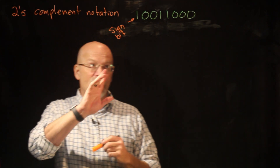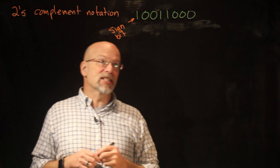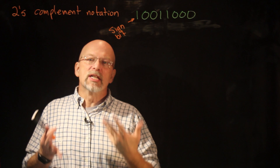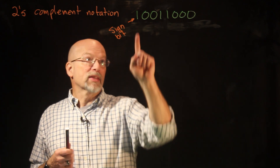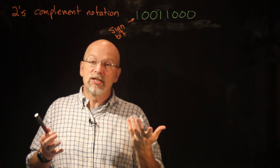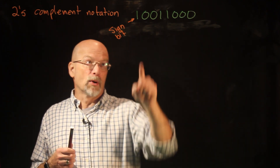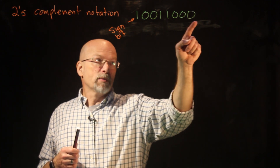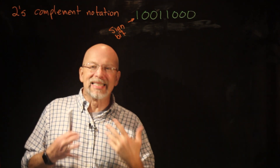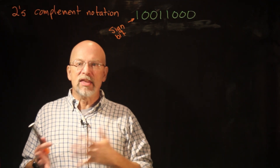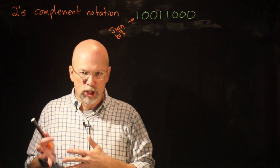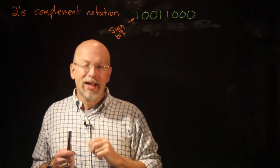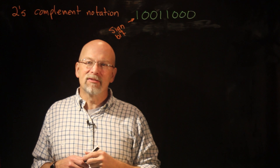In the case of the sign bit being one, we know it's a negative number. In the case of the sign bit being zero, it's a positive number. If that bit were a zero, then this would have been a positive number and it would have looked exactly like the unsigned binary version of that number. But since there's a one here, it's a negative number.